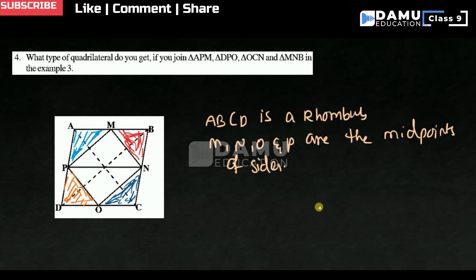Then if you join like this, what shape will you get? Whatever we are shading here, that shape we will get. So this is the quadrilateral we will get.